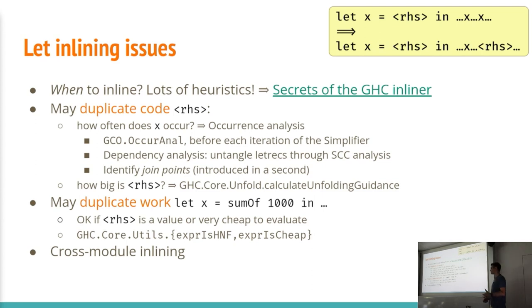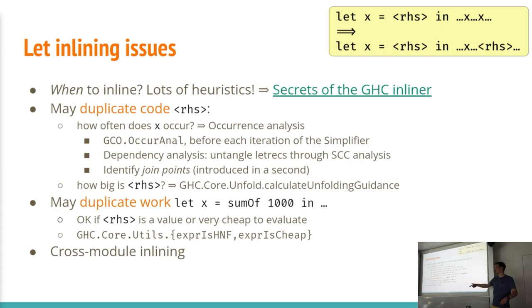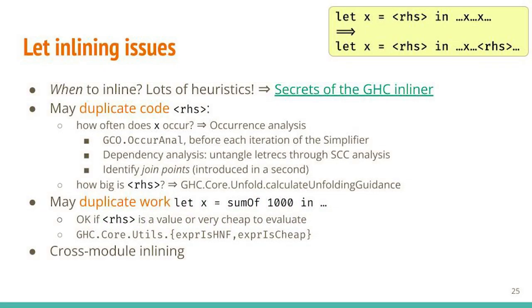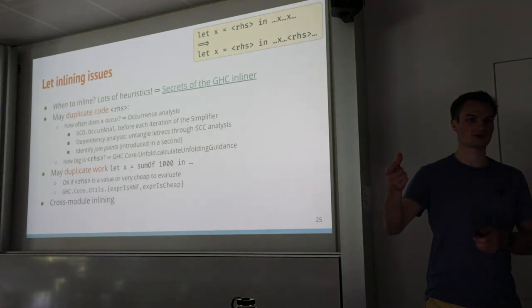Question about sharing: yes, inlining does affect sharing. There are many heuristics described in 'Secrets of the GHC Inliner'. For example, is it okay to duplicate the right-hand side? To answer this, we ask how often x occurs — this is answered by occurrence analysis, which runs before each iteration of the simplifier. Occurrence analysis also does dependency analysis, untangling let-rec using strongly connected component analysis, and identifies join points. When x occurs multiple times, we might still inline it if it's reasonably small. This is estimated by the function calculateUnfoldingGuidance, which I suggest checking out if you want to improve inlining heuristics.